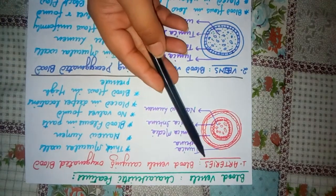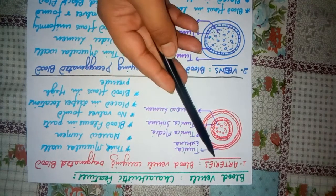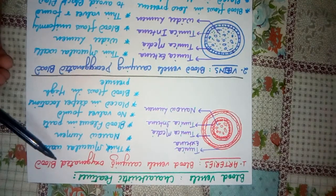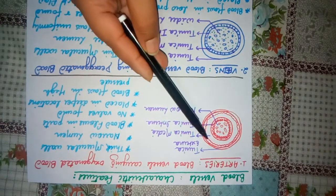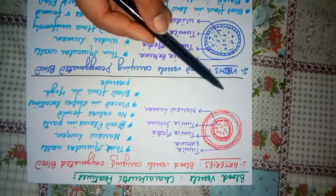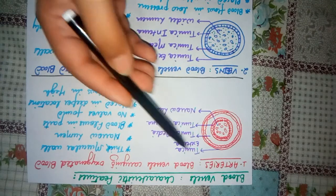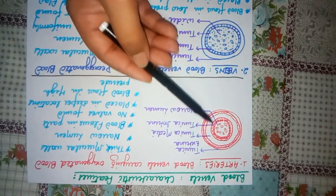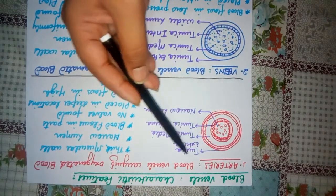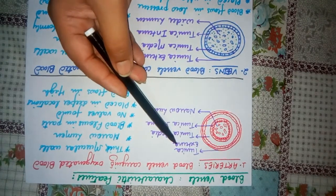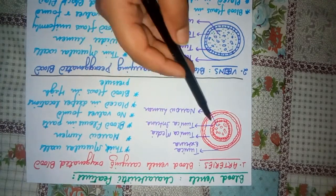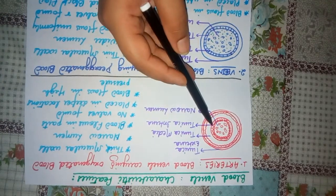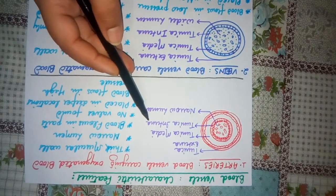First, the blood vessels are called arteries. The arteries carry oxygen-rich blood. You can see this diagrammatic structure. The arteries are divided into 3 regions. The outer layer is called tunica externa, the middle layer is called tunica media, and the internal layer is called tunica interna.